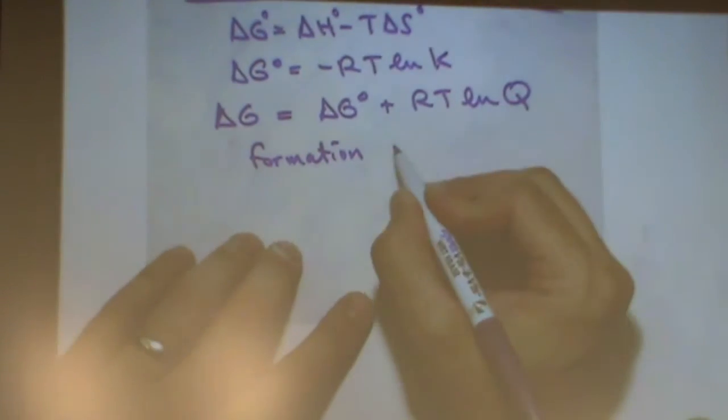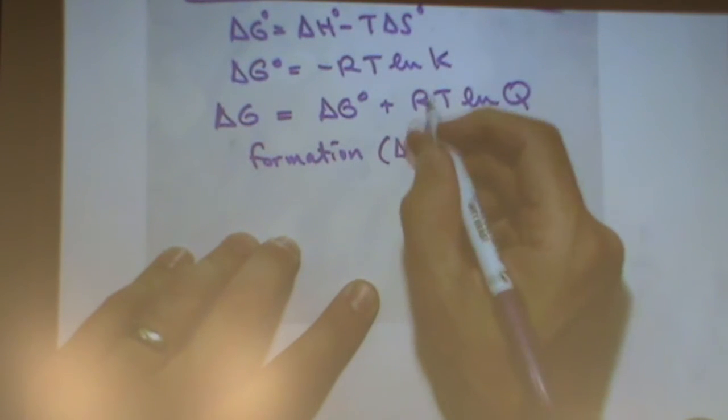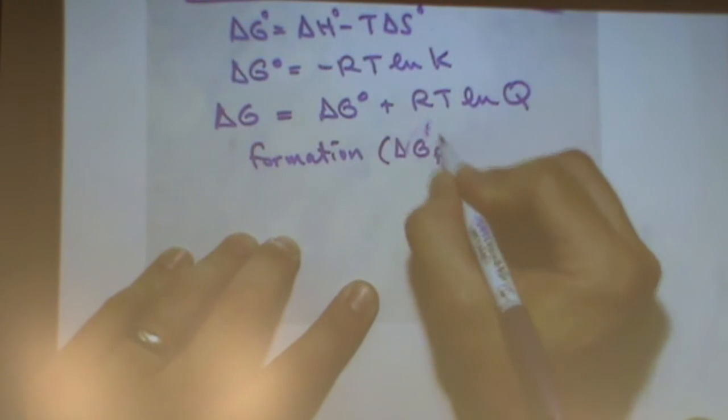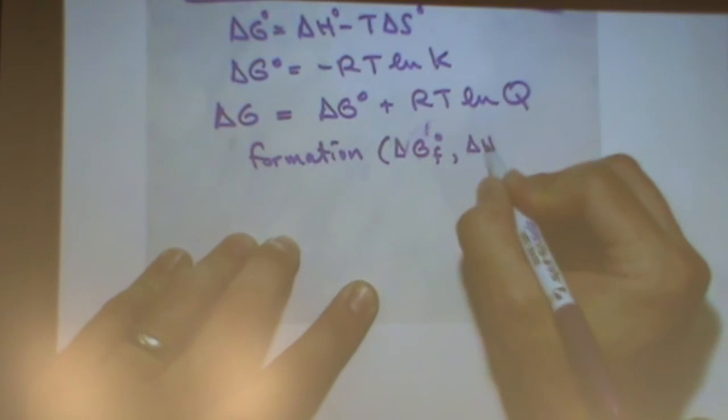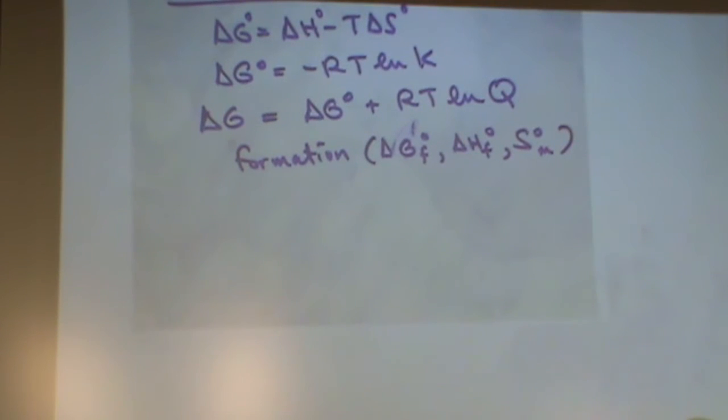There's also the delta G without a standard is delta G standard plus RT ln Q. There's a couple of, those are probably the most common that you would use. There's also the formation reactions or formation equations. That means where you go products minus reactants. We'll do an example in just a moment on that.